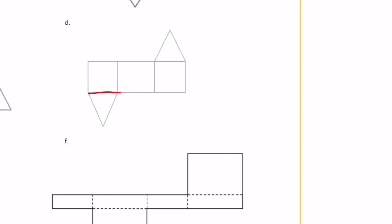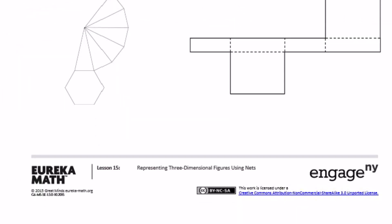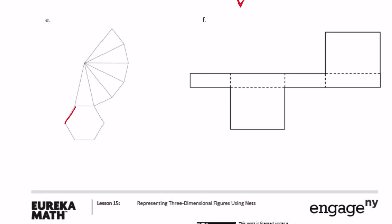Over here we have two triangles that would be our bases, and it would fold up into a prism because it has two bases. The bases are triangles, so this is a triangular prism. And then E looks like we only have one base and it is a hexagon. Since we only have one base, this is going to be a pyramid — a hexagonal pyramid.